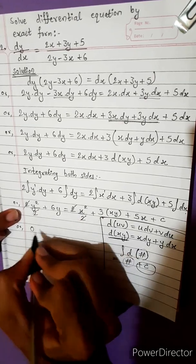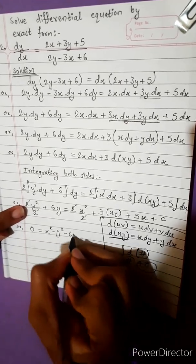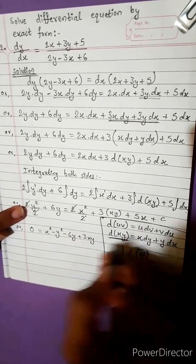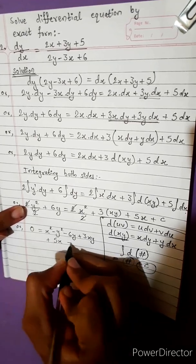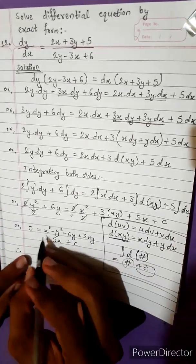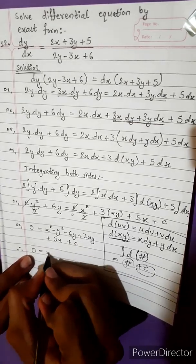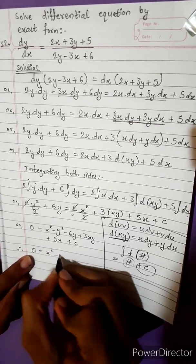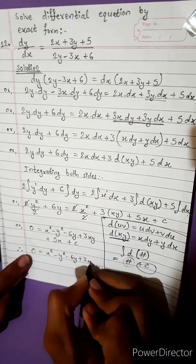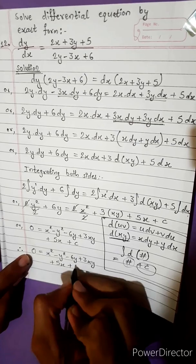The general solution is: 0 equals x squared minus y squared minus 6y plus 3xy plus 5x plus c.